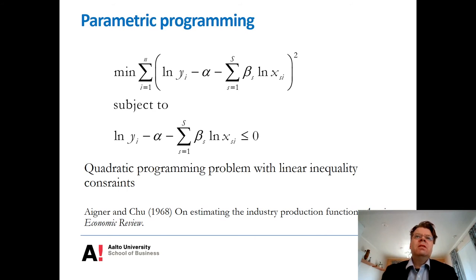But to enforce that these deviations must be less than or equal to zero, so we can only allow one-sided deviations, then Aigner and Chu impose this kind of inequality constraint. Notice that without the constraint, of course, this least-squares problem would just boil down to the standard linear regression estimated by ordinary least squares. But this presence of inequality constraints for each observation i makes that we need to apply quadratic programming, because there is not any closed-form solution to this kind of constrained least-squares problem.